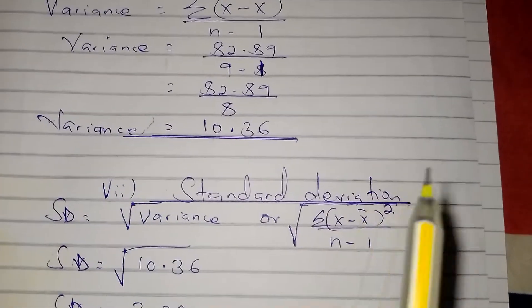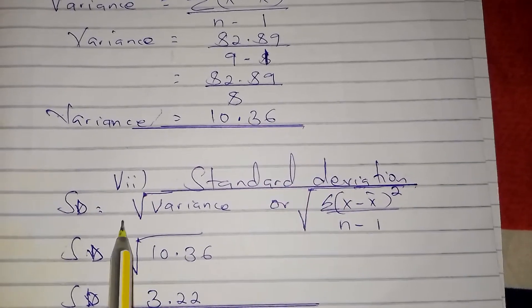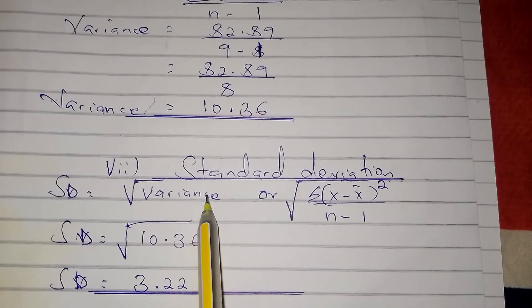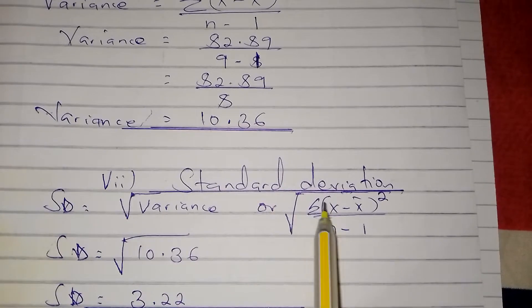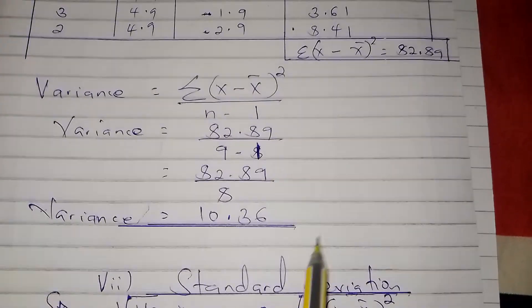The next thing we look at is standard deviation. The formula for standard deviation is the square root of variance. You get the square root and put in the formula for variance.